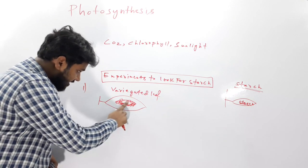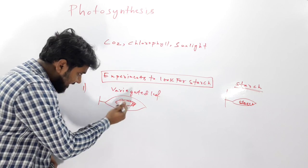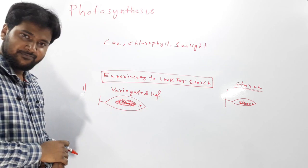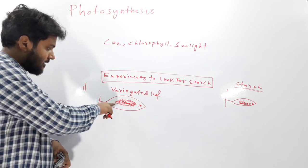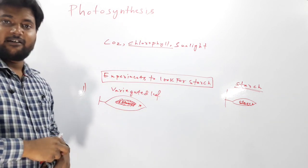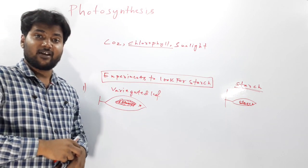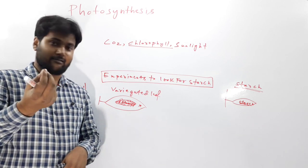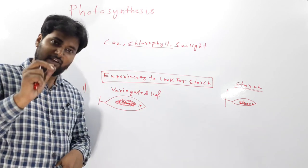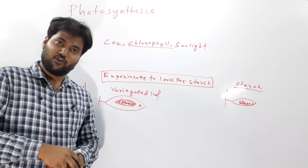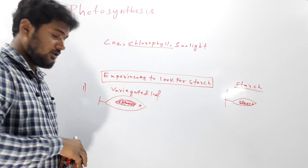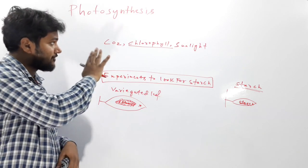Starch was present only in the green part, not in the non-green part. This experiment suggested to us that chlorophyll — which gives the leaf its green color — is essential for photosynthesis to occur.